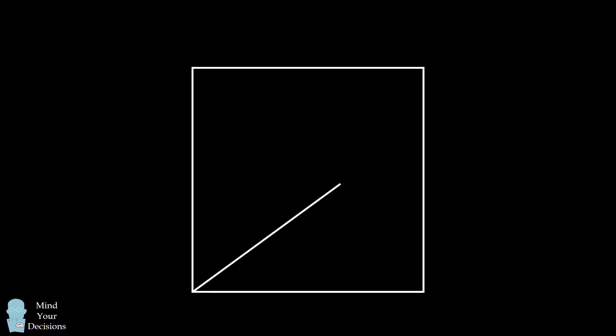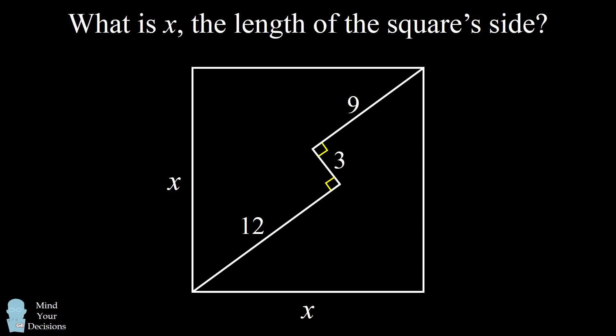We'll start out with the square. From the bottom left corner of the square, I'll draw a line segment to the interior with a length of 12. From the end point of this line segment, I'll construct a perpendicular going up and to the left with a length of 3. From the end point of this line segment, I'll construct another perpendicular that connects to the upper right hand corner of the square. And this line segment has a length of 9. The question is, from the given information, what is x, the length of the square's side?